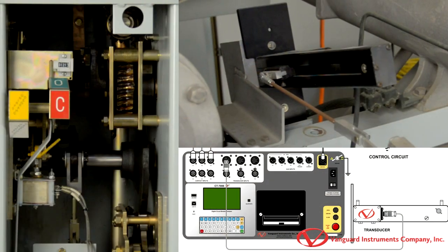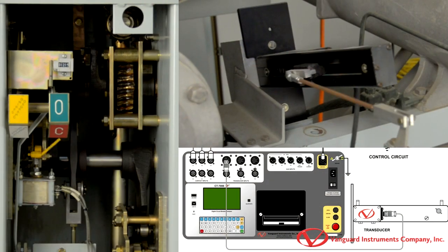Next, we will connect the digital transducer to the CT7000 S3 as shown here.